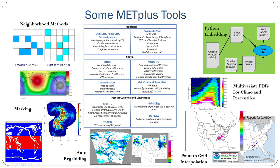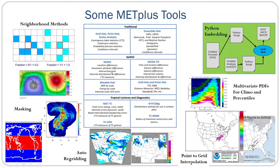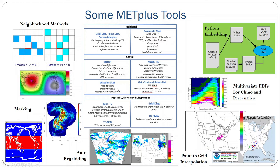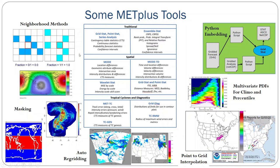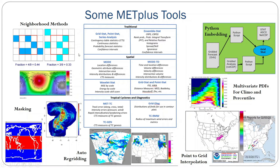This is a different way of thinking about the METPLUS tools. We not only have traditional statistics — both continuous, categorical, and probabilistic — as well as confidence intervals, but we also have several spatial methods including object-based diagnostic evaluation, looking at a single point in time or over the time dimension, spatial decomposition of error fields, and neighborhood methods. An example in the upper right shows neighborhood methods allowing for displacement error while still being able to compare forecasts across several different neighborhood sizes.